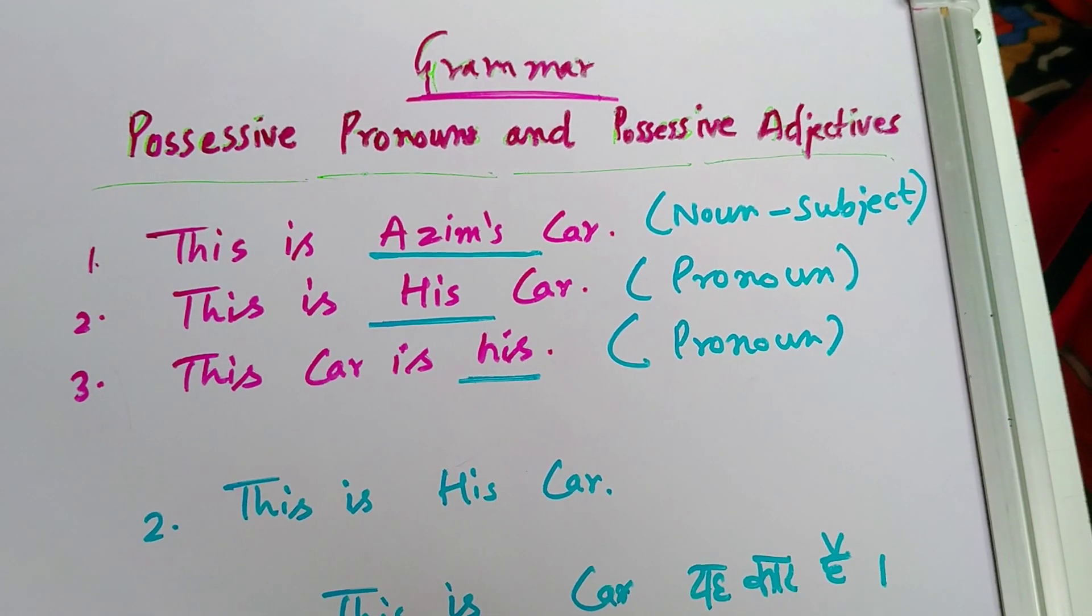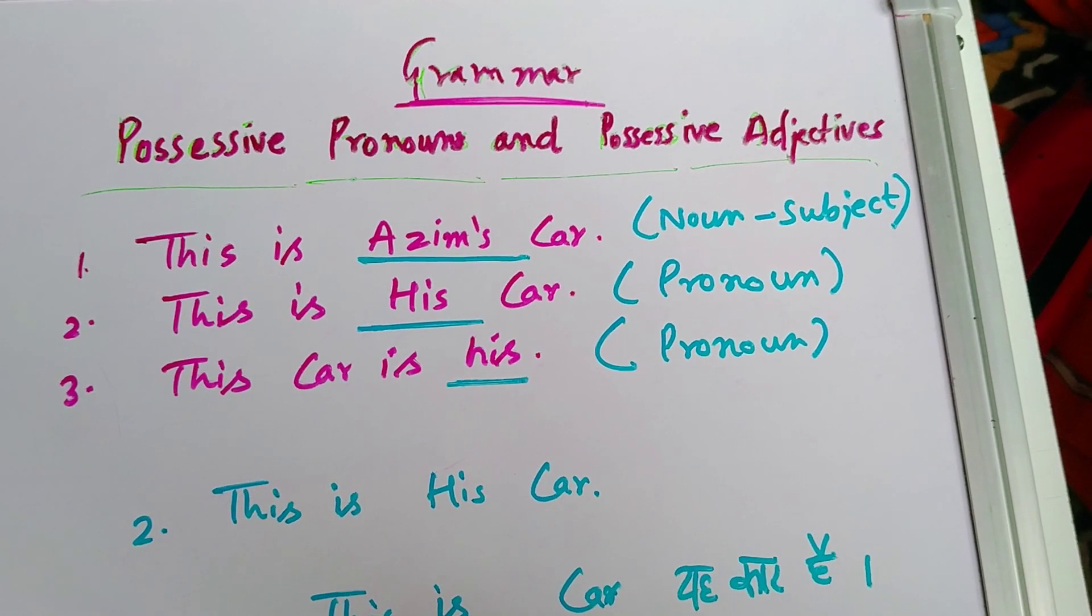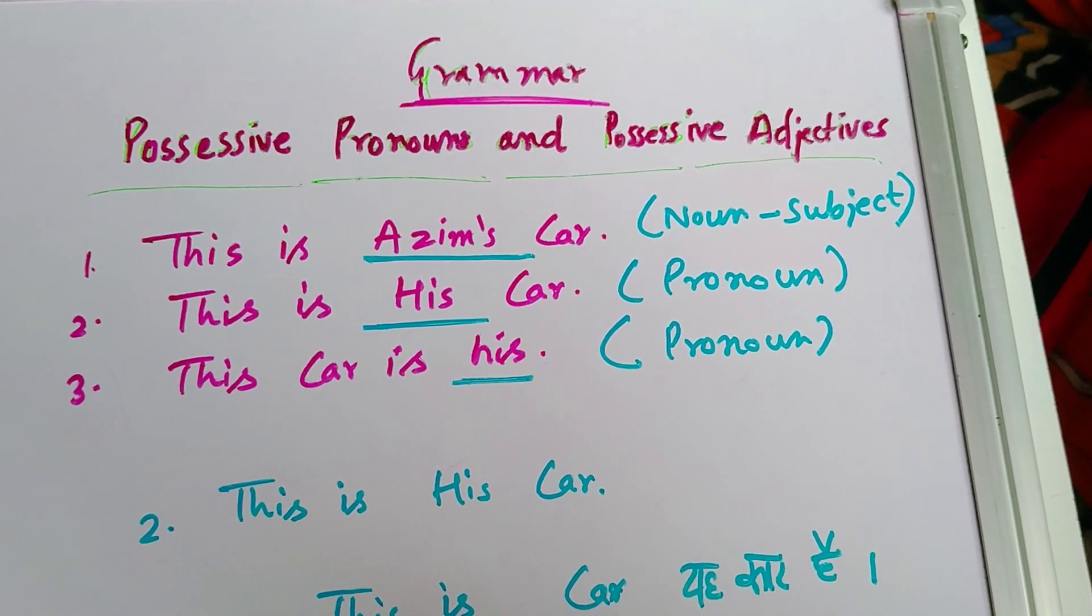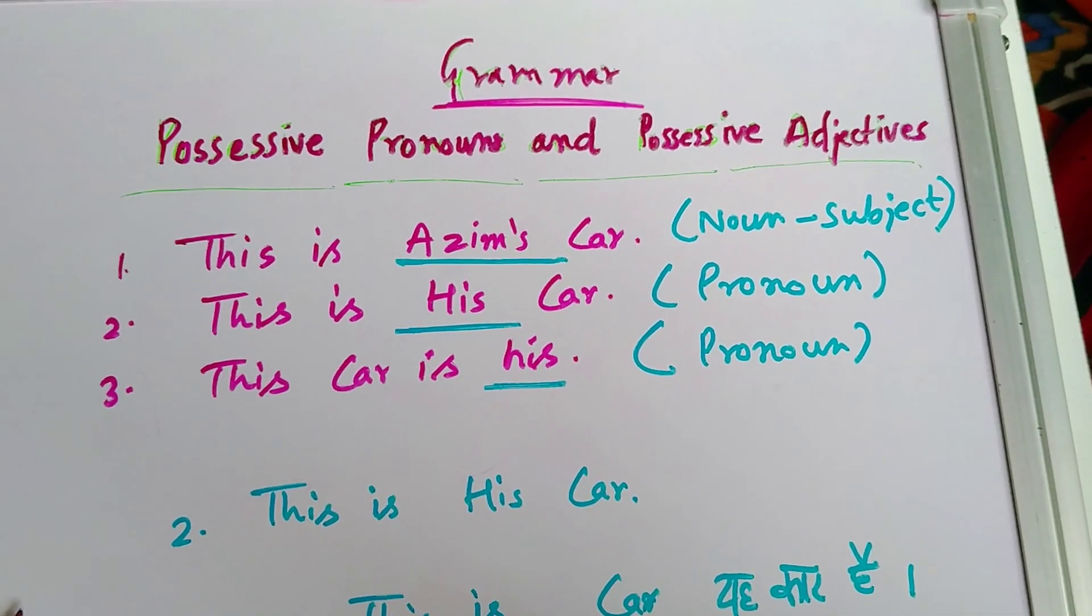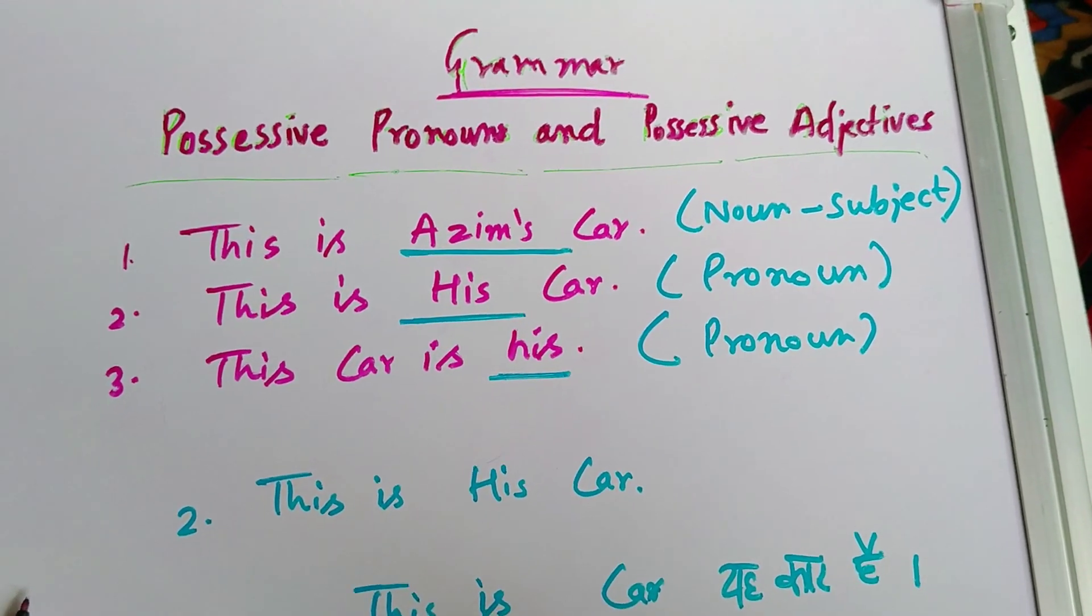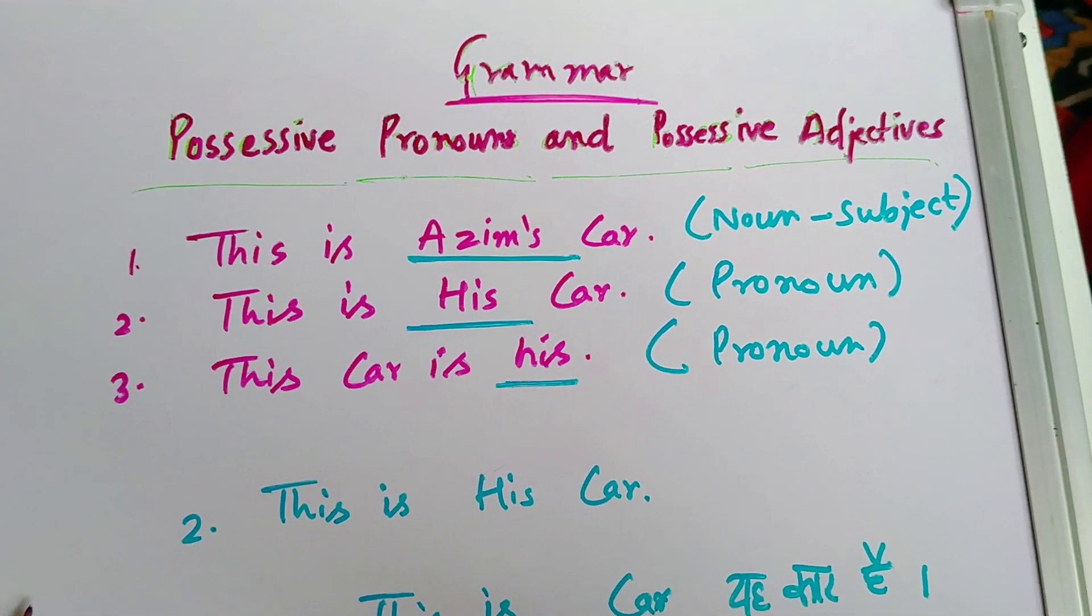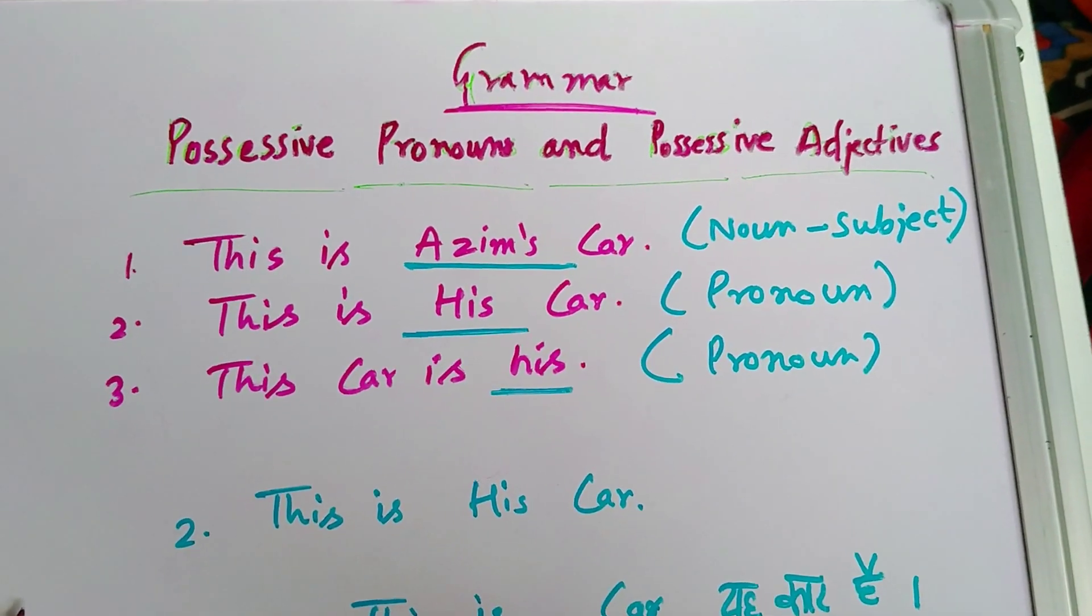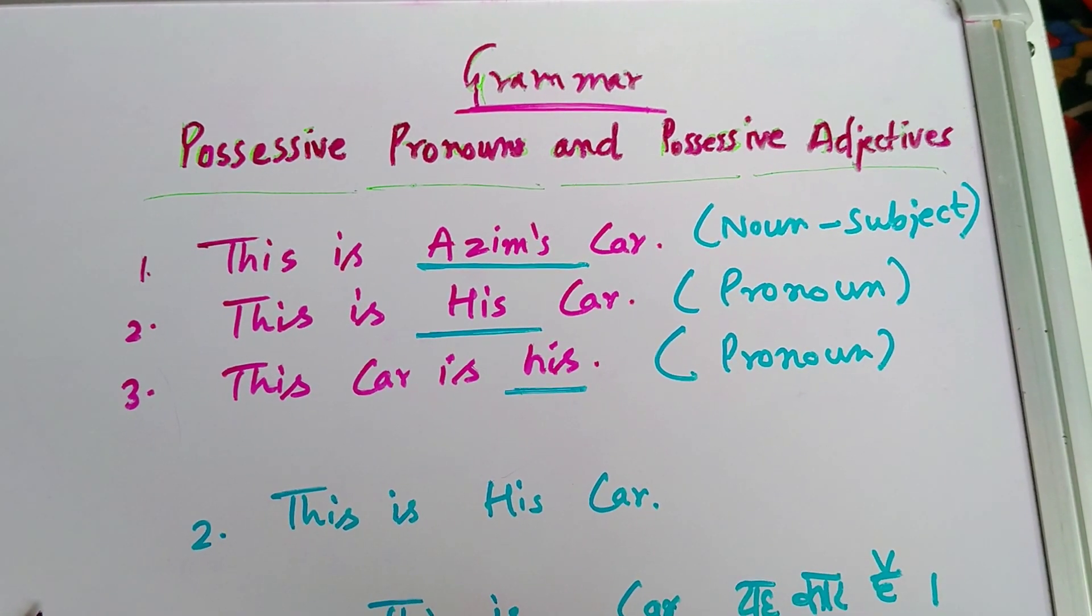Again, possessive adjectives - adjectives are the words which describe qualities and extra information about the noun. Adjectives basically are used only for nouns. So don't get confused by seeing the verb or any other word. So let's start our chapter.